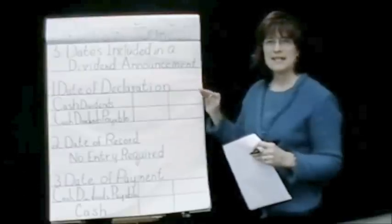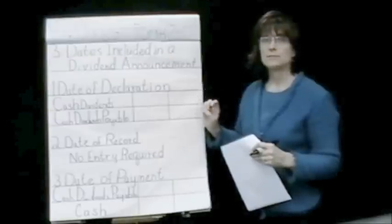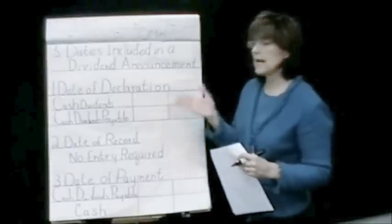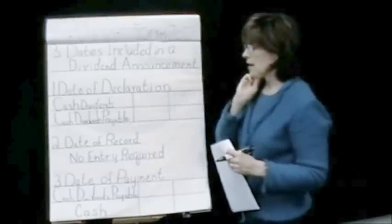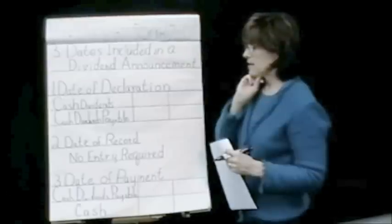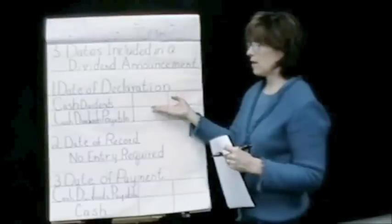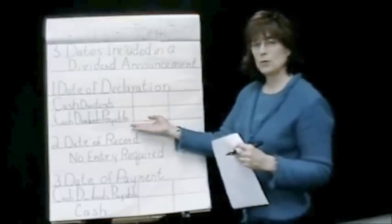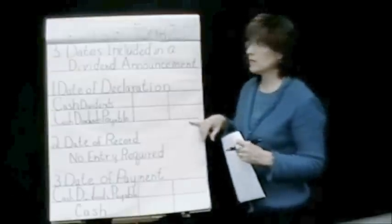The date of declaration is the day the dividend is declared — the day they have a meeting and it's declared. On that day, if it's a cash dividend, it actually has to be recorded on the books. We would use an account called cash dividends, which we're going to debit because it would reduce our equity. Decreases in equity are recorded by debits. Then we show the liability — cash dividends payable — which is a liability account, so we'll be crediting cash dividends payable. That's the day the cash dividend is announced.